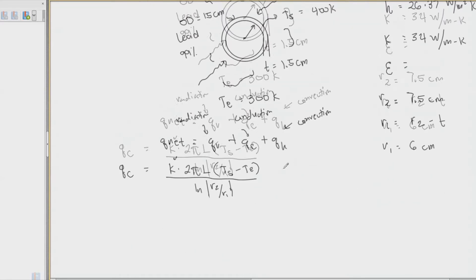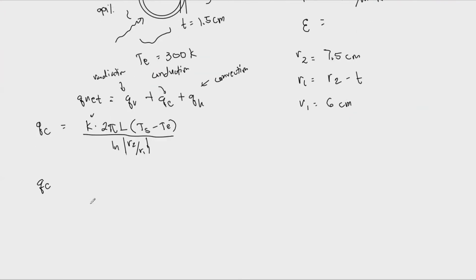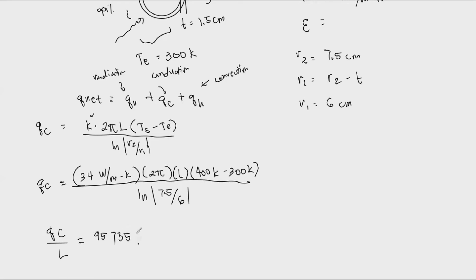Substituting into the conduction equation: Q_c = 34 × 2π × L × (400 - 300) / ln(7.5/6). The heat of conduction per unit length equals 95,735.8163 watts per meter.